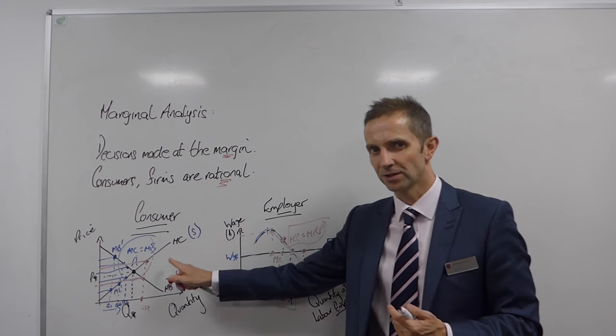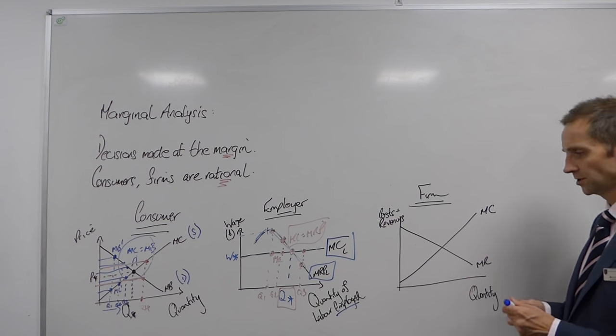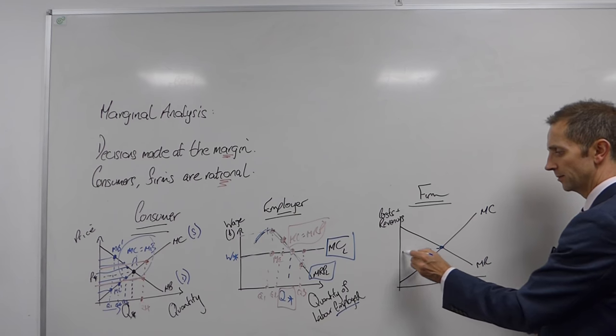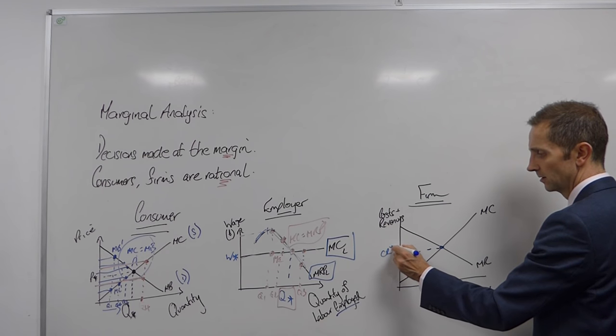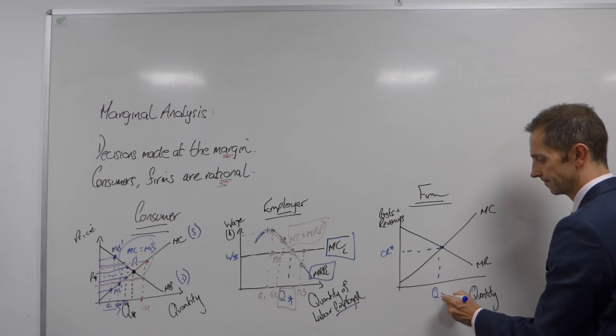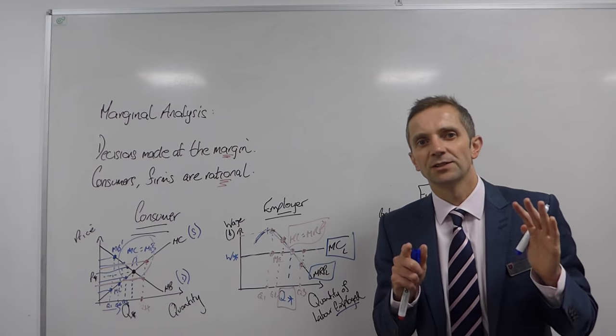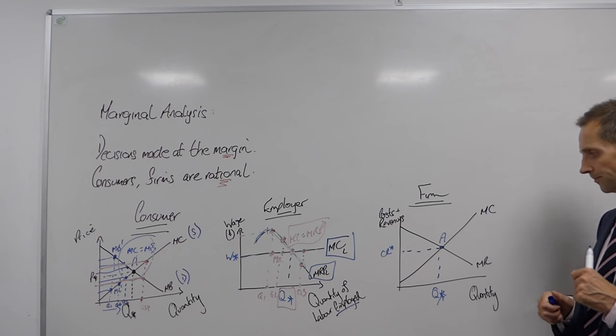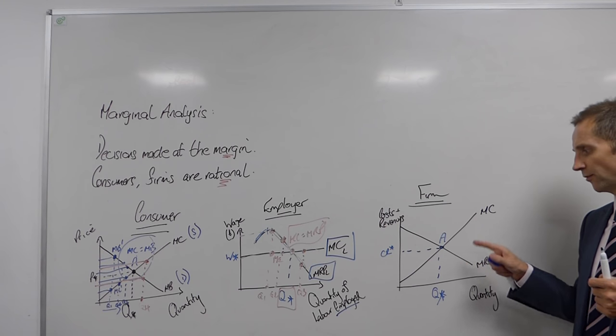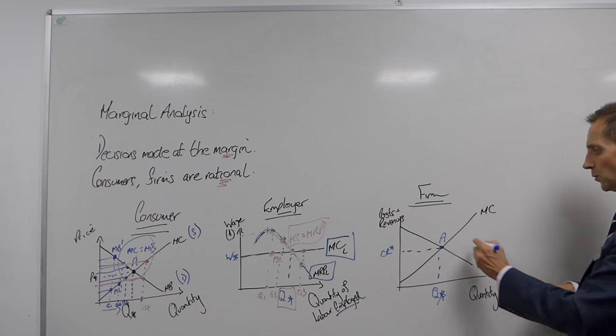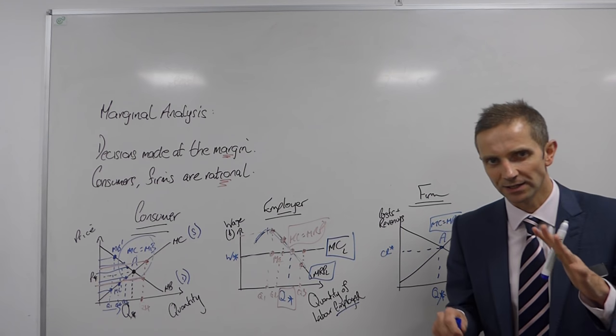Okay. So this is very similar to the consumer's position actually. So I've labelled this cost and revenue and quantity. And again, this is our equilibrium point here. So we'll call this CR star, Q star. So this is the level of equilibrium. And this is where the firm is supplying goods and services. So in this instance, it will be logical, rational for the firm to supply up to the point where, again, MC equals MR. Now why is that the case?